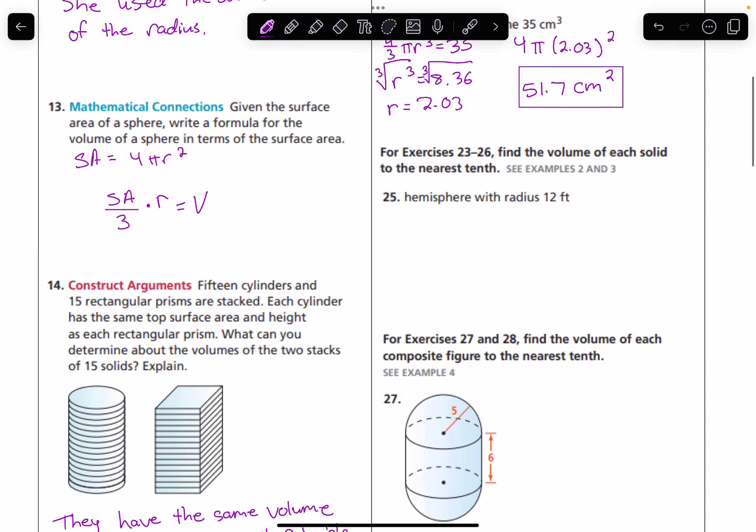Number 25, find the volume of each solid to the nearest tenth. A hemisphere means that instead of 4/3, I've got to have half of 4/3 or (2/3)πr³. So (2/3)π times radius 12 cubed. That's going to give us 1,152π. And if we want to go to the nearest tenth, that is equal to 3,619.1 feet³.